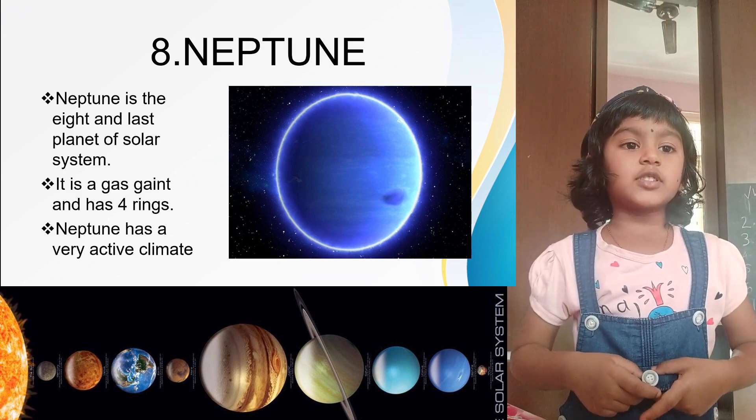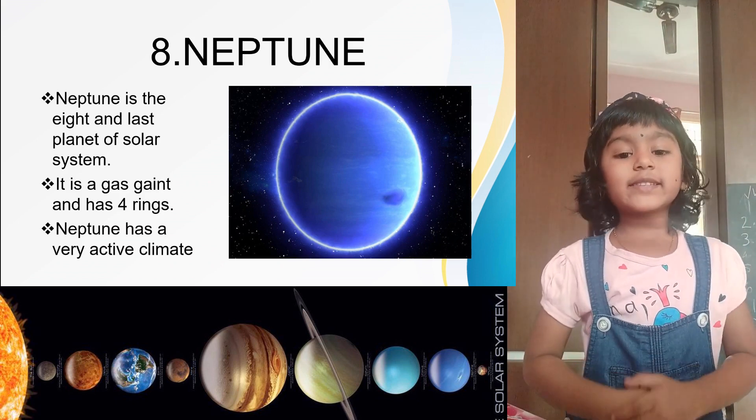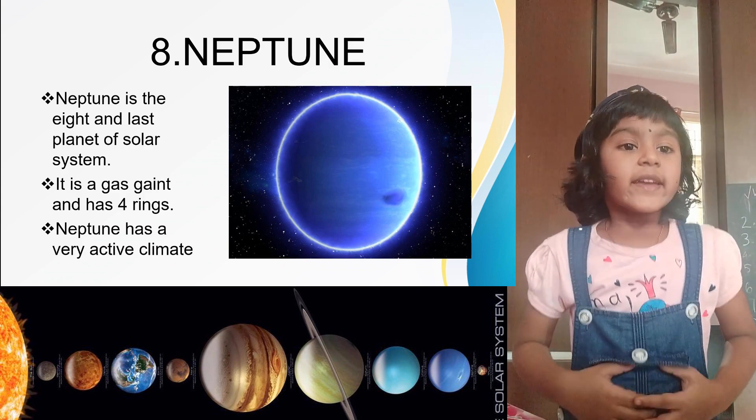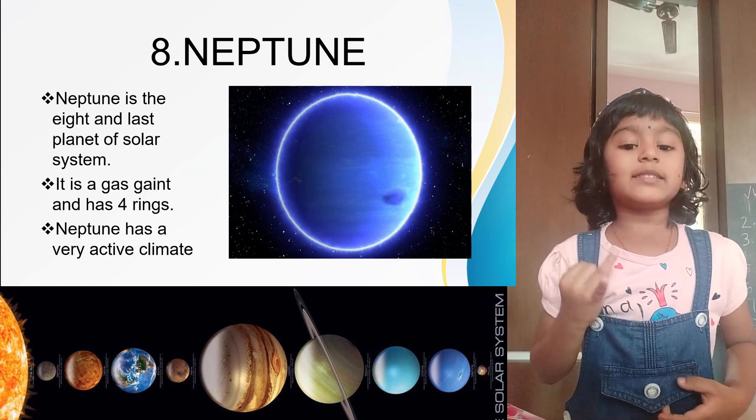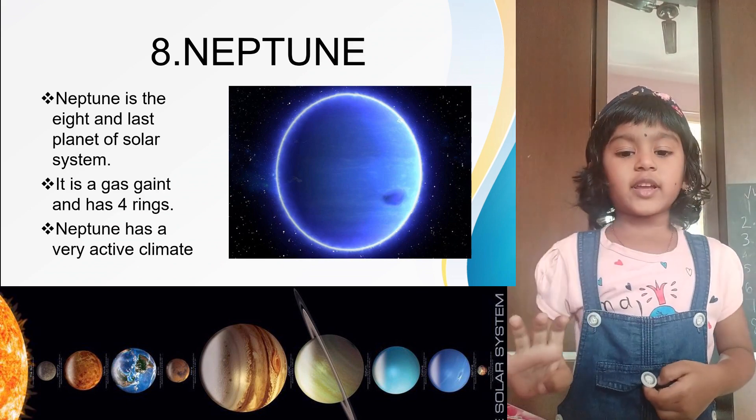Neptune. Neptune is the eighth and last planet of the solar system. It is a gas giant and has four rings.